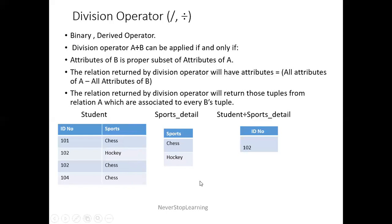The second point: the relation returned by the division operator will have attributes equal to all attributes of A minus all attributes of B — meaning the column present in A but not in B. In the Student table we have ID number and Sports; in the Sports detail table we have Sports. Sports is in both tables, so in the resultant table I will get ID number because it's not present in the Sports detail table.